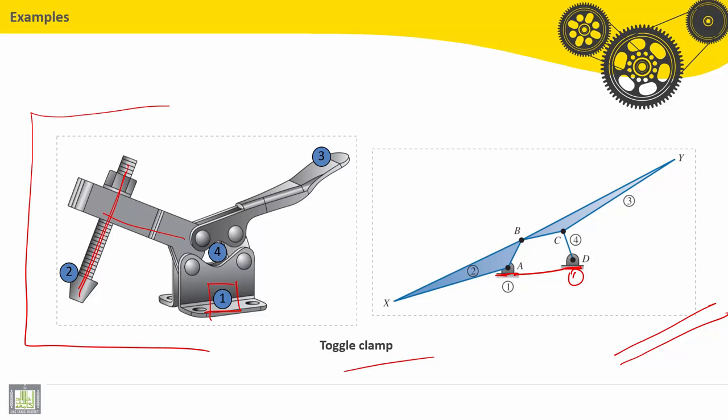Really this screw and this part are linked together, are fixed. There is no relative motion. So part number two has a revolute joint in A with the ground, and in B with part number three.